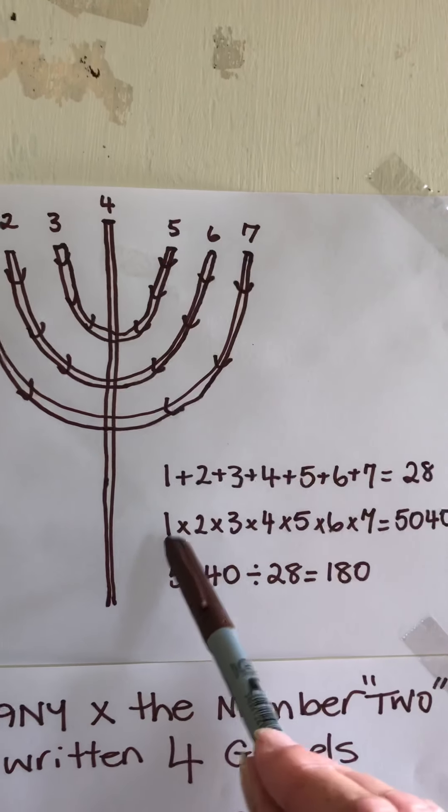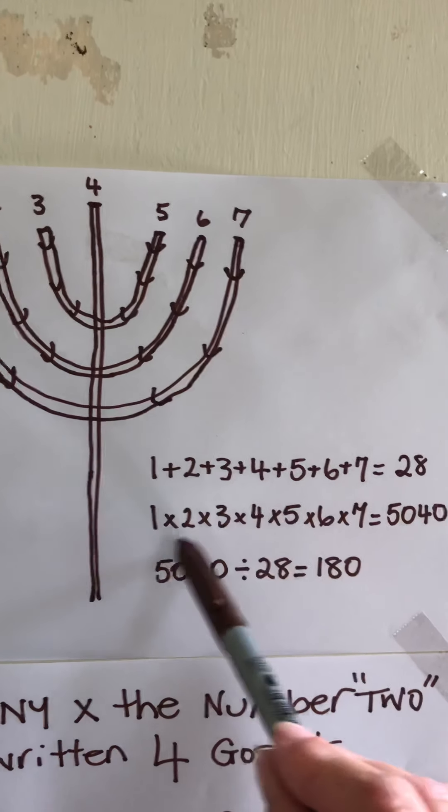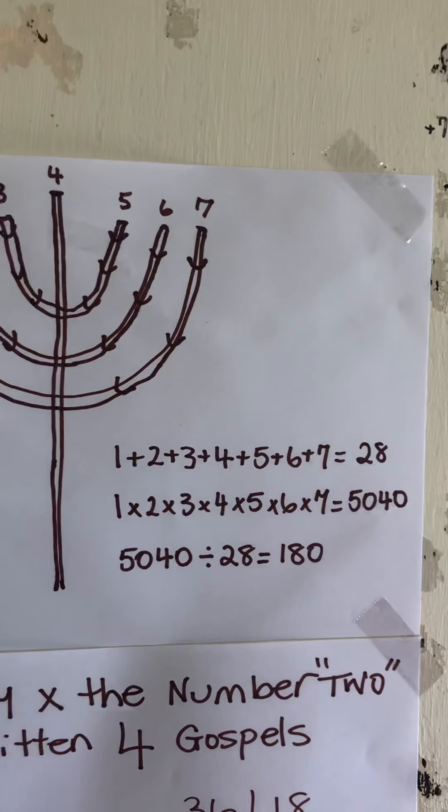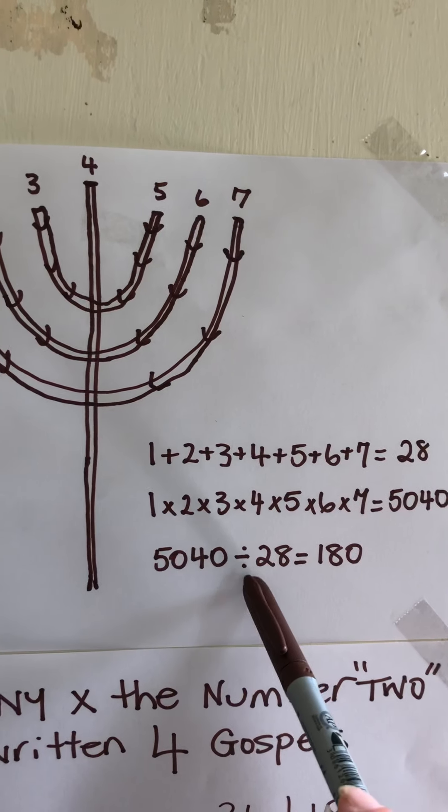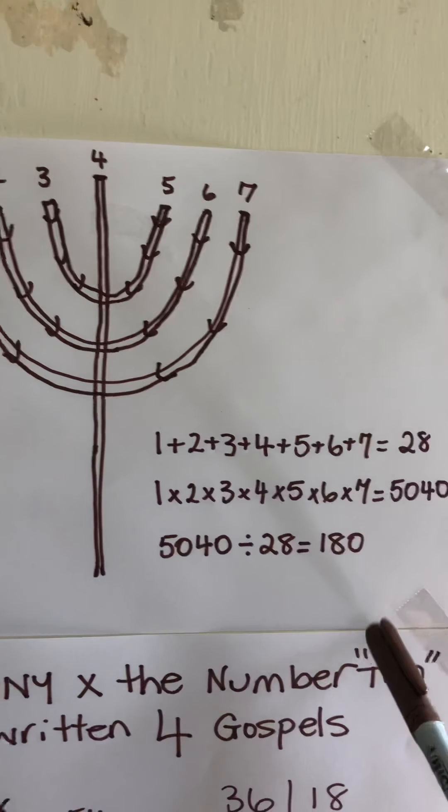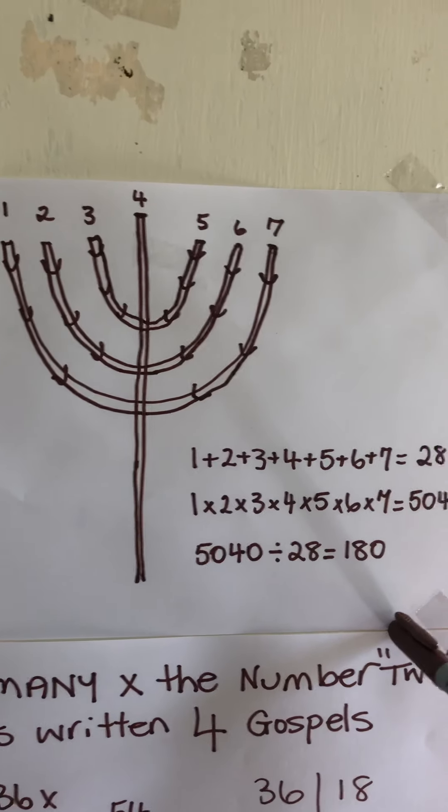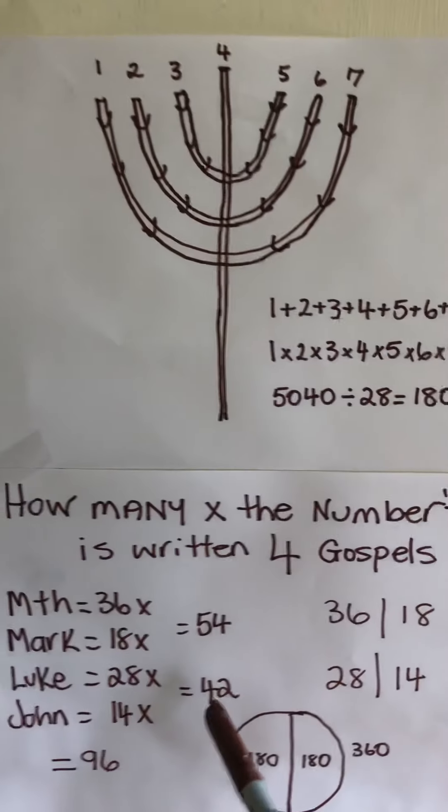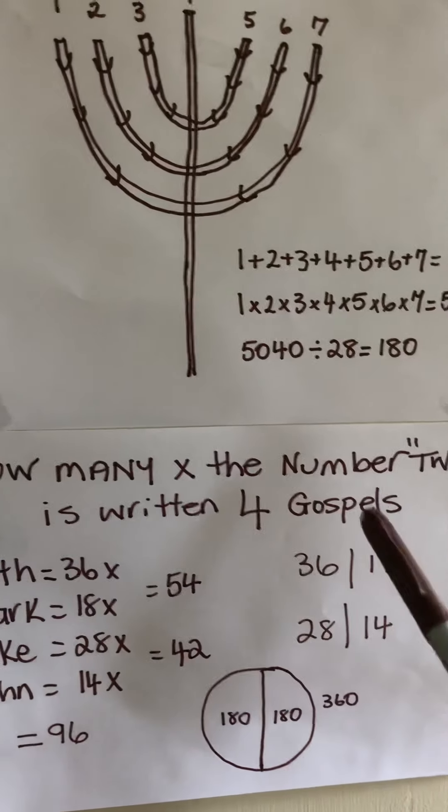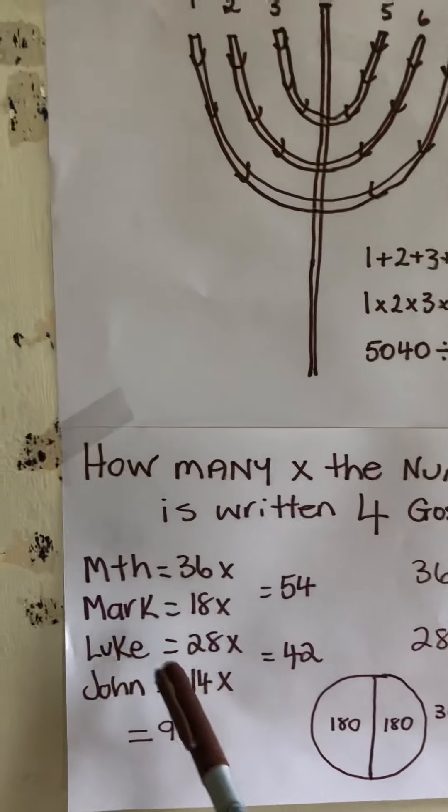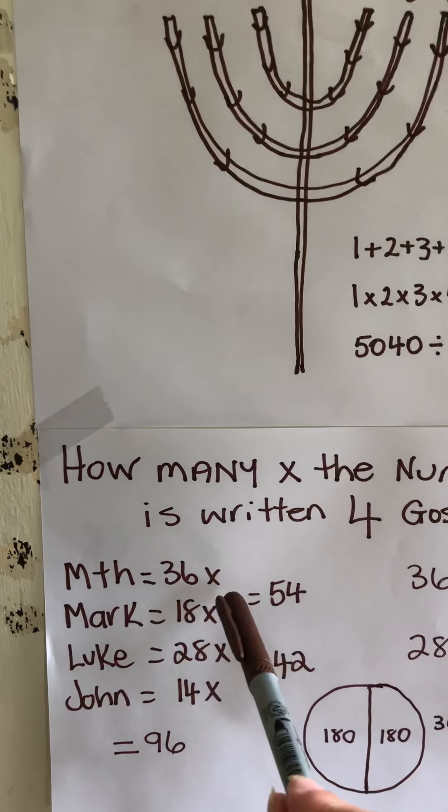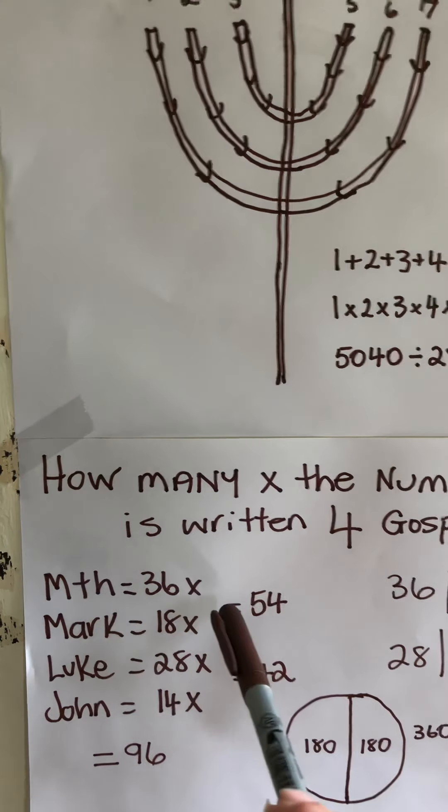When we multiply 1 times 2 times 3 times 4 to 7, we get 5040. 5040 divided by 28 equals 180. This is the amount of times that the number 2 is written in the four gospels. We can see how our father highlights the dividing.